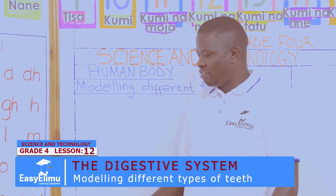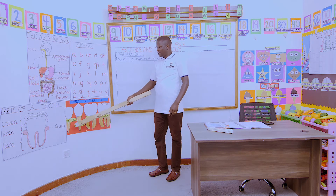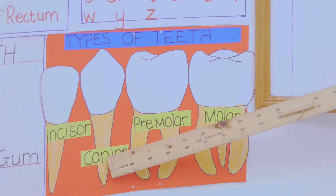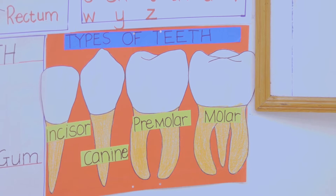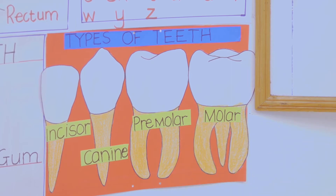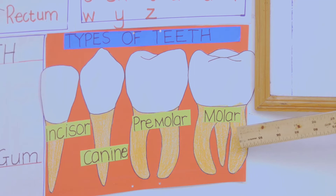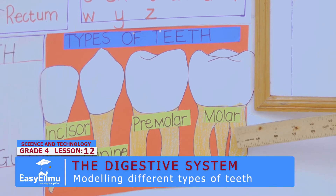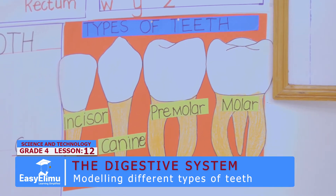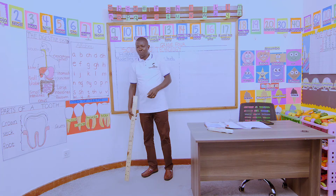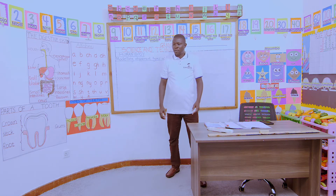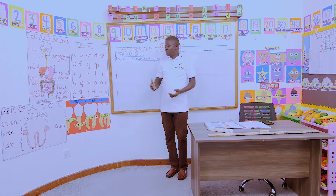Can everybody look at this chart? We have the types of teeth. We have incisors — the first teeth, always found in the front part of our mouth. We have the canines, just adjacent to the corners. We have the premolars, which follow the canines going to the back of our mouth. And the last type is the molars, found at the end of our teeth. The last four molars are called wisdom teeth because they normally grow when we are grown up.